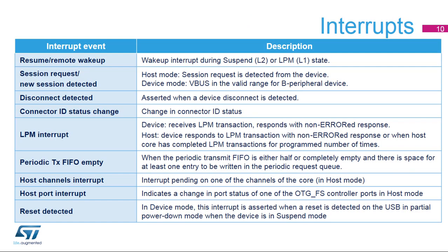Interrupts from this USB block can be triggered by a large number of events or state changes. This slide and the following three slides show all the events that can generate an interrupt. These interrupt sources are diverse, ranging from events related to low power management and OTG, to events related to normal host behavior and regular USB reset and disconnect events. In device mode, the reset detected interrupt is asserted when a reset is detected on the USB and partial power down mode when the device is in suspend mode.